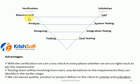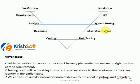How the flow of the VV model goes: requirements is completed, analysis is completed, designing is completed, and then coding is completed. Once coding is completed, the development people will do the unit testing and then give it to the testing team. The testing team will start with module-level testing, then integration level, system level, UAT, pre-production and production.